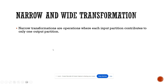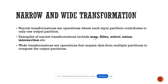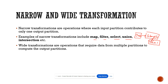Narrow transformations are operations where each input partition contributes to only one output partition. Examples would be operations like map, filter, select, union, and intersection. These are all narrow operations where a single job has a single stage, and that single stage has a single task. So there is no multiple stage involved in narrow transformation — we will see this more practically in Databricks.